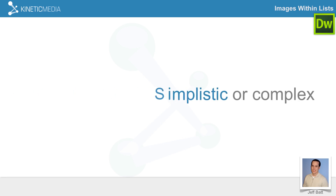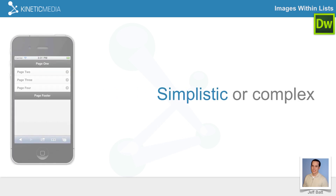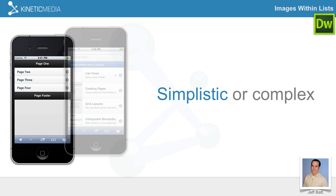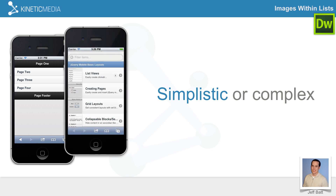Last time in our previous video we talked about simplistic versus complex lists. By default you have a simplistic list which basically just has text and then an arrow to go to whatever page you may link to. We also talked about making more complex lists with list views, descriptions, bubbles, and different things like that. One thing we didn't get into was using images — thumbnails or icons — within the list views.